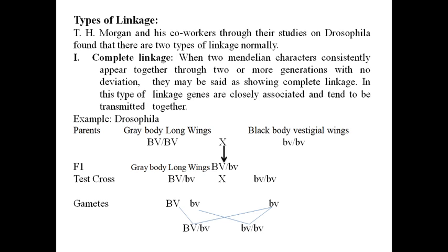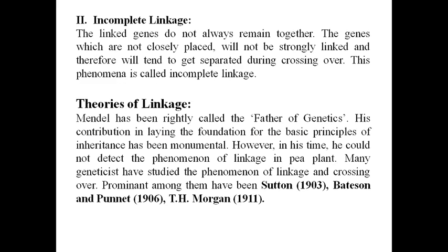The second type is incomplete linkage. This means the linked genes do not always remain together because they are not so tightly linked, and they get separated during crossing over. Genes which are not closely placed will not be strongly linked and will tend to separate during crossing over — this phenomenon is called incomplete linkage.